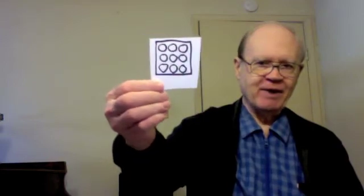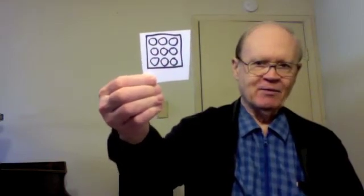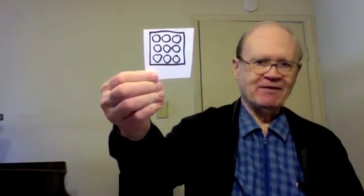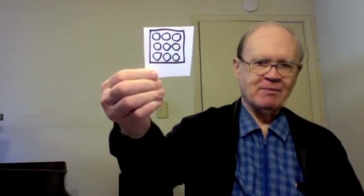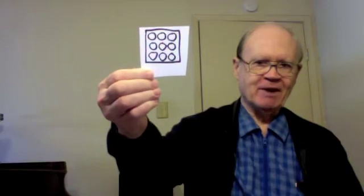This challenge is about square numbers. A square number is a counting number such that that many objects can be arranged in the form of a square in rows and columns. For example, nine is a square number because we can arrange nine marbles like this in a three by three square, the same number of rows as columns — three rows, three columns. We can get nine by multiplying three times itself, three times three.